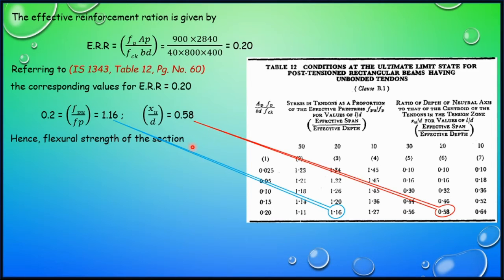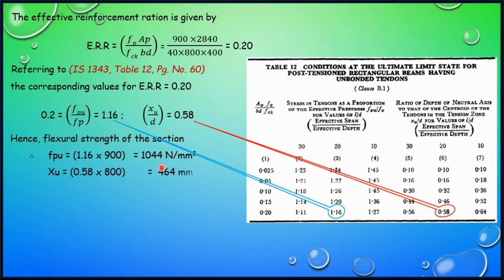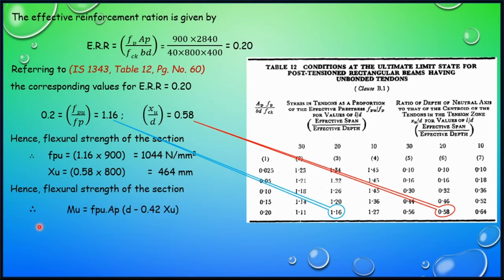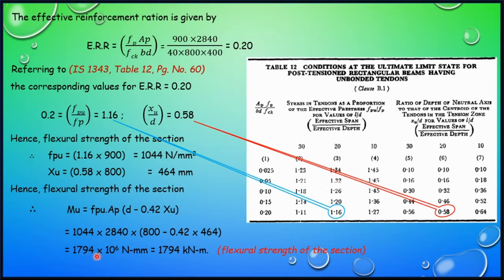We now calculate the flexural strength of the section. FPU = 1.16 × 900 = 1044 N/mm², and XU = 0.58 × 800 mm = 464 mm. Hence, the flexural strength MU = FPU × AP × (D − 0.42 × XU). Substituting values, MU = 1794 × 10⁶ N·mm, which can be written as 1794 kN·m.